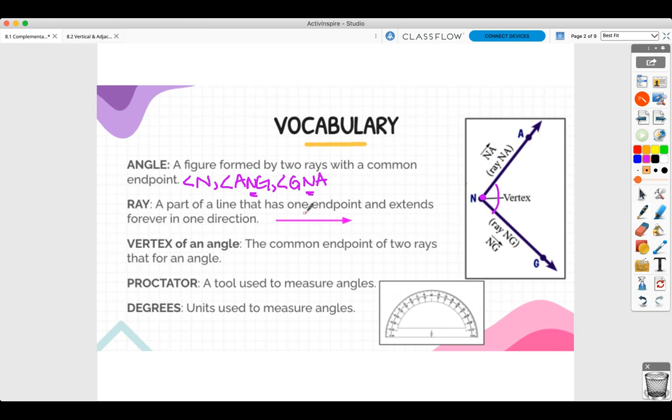And a ray is part of a line that has one endpoint that extends forever in one direction. So you have one endpoint and it goes forever. So a ray over here is ray N, A, and ray N, G. As I said, the vertex is where the angle is. Protractor is this thing right here. It can measure angles. And degrees is a unit to measure angles.